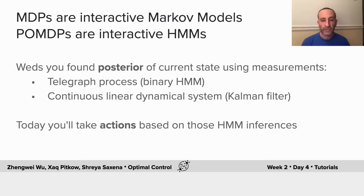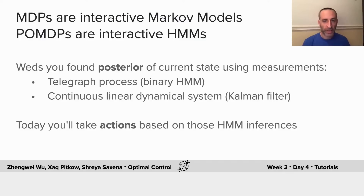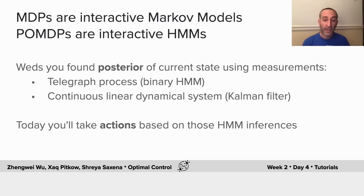We're going to continue the running examples we've had throughout the week with a binary and continuous variable. On Wednesday, you found a posterior over the current hidden state using measurements — using the telegraph process, which was a binary HMM, and also a continuous linear dynamical system with Gaussian process noise and observation noise, which gave us the Kalman filter. Today, you'll learn how to take actions based on those hidden Markov model inferences.